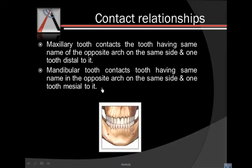We have some rules of contact between the maxillary and the mandibular teeth. Maxillary teeth contact the tooth having the same name on the opposite arch. For example, the maxillary central incisor will contact the mandibular central incisor — the tooth having the same name on the mandible — plus one tooth distal to it.